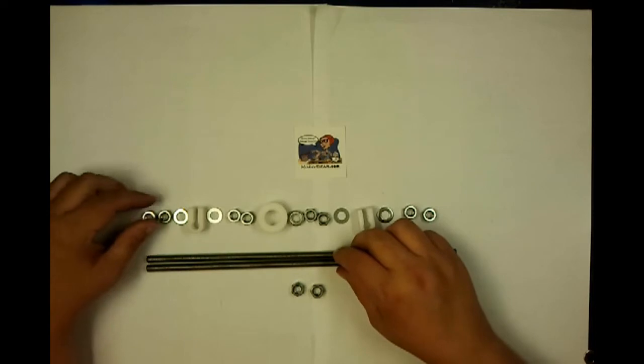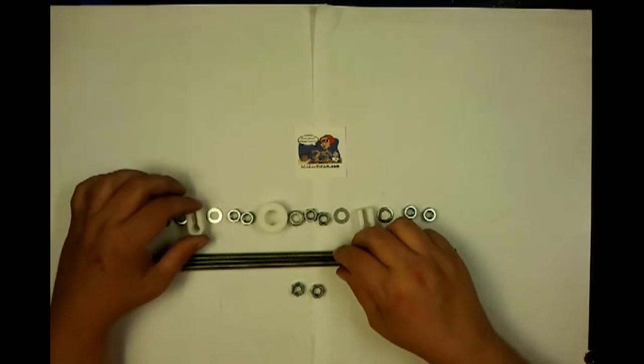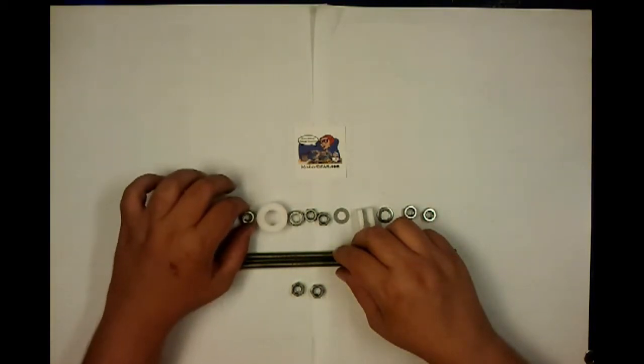The order for this part is nut for the outside, nut, washer, printed rod coupler, washer, nut, and then a nut.